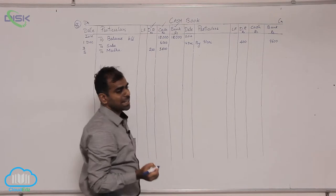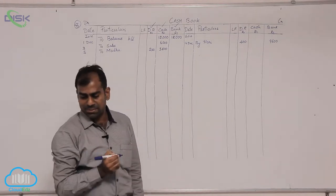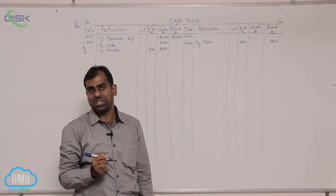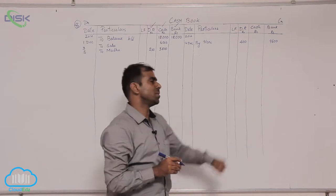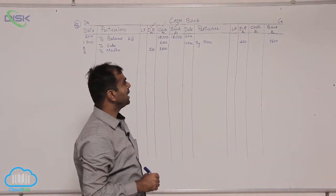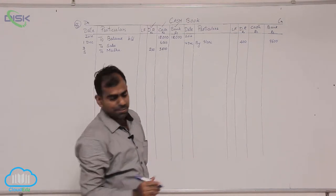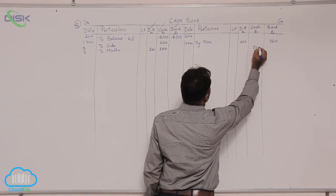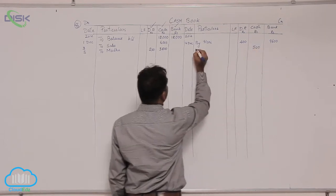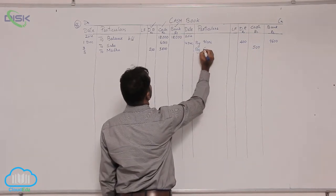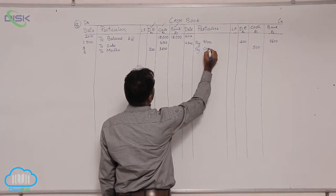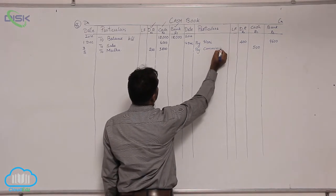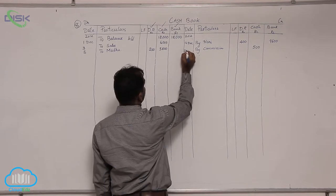Now let us move on to the next transaction which is on 20th: it is paid commission, again a payment. So we will record the amount in the cash column — 500 — again writing 'by', the reason being commission, the date being 20th.